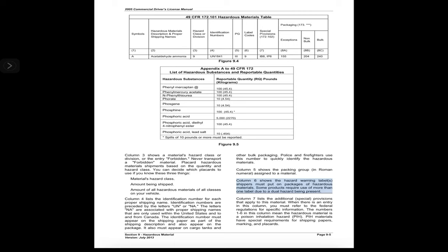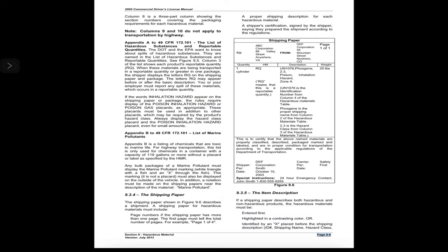Column 5 shows the packing group in Roman numerals assigned to a material. Column 6 shows the hazard warning labels shippers must put on packages; some products require more than one label due to a dual hazard. Column 7 lists additional special provisions; when there is an entry, you must refer to the federal regulations. Numbers 1–6 in this column mean the hazardous material is a poison inhalation hazard (PIH); these materials have special requirements for shipping papers, marking, and placards.